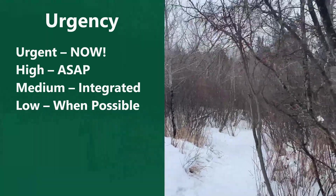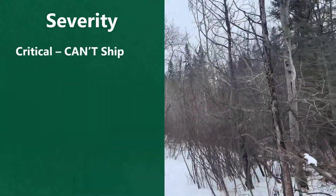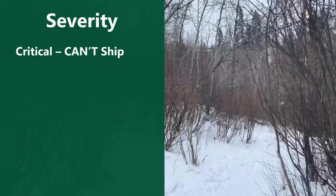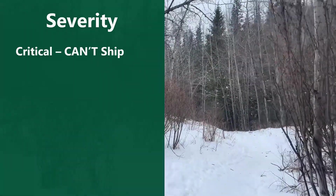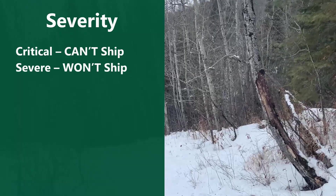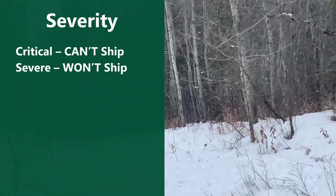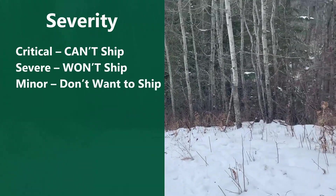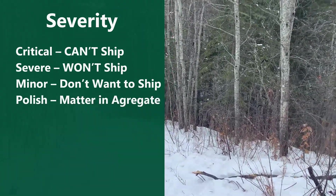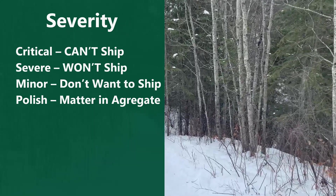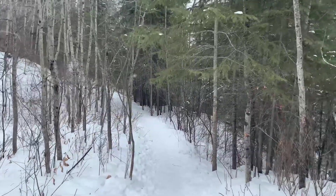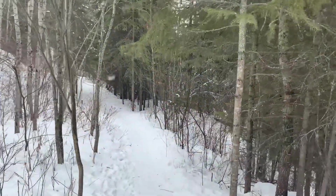Then you sub-sort the bugs by severity. Critical means you literally cannot ship this project with this bug — a 100% reproducible crash or something that won't get through first-party certification. A severe bug is one you will not allow the project to ship with, like a plot that is unable to be completed. Low is a bug that affects quality but isn't preventing shipping. And finally polish — bugs that may not affect quality individually but accumulate to do so. All 16 combinations in this matrix can exist; some are rare, like urgent polish bugs, but they can occur.